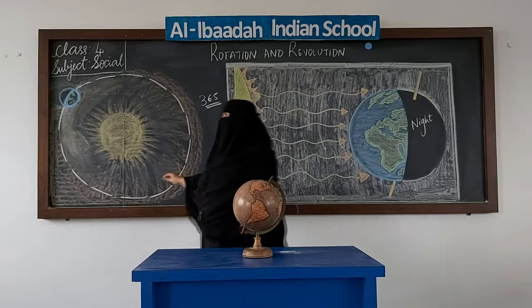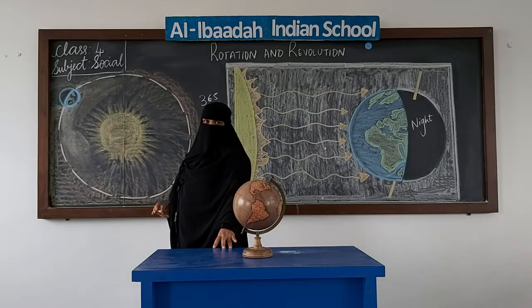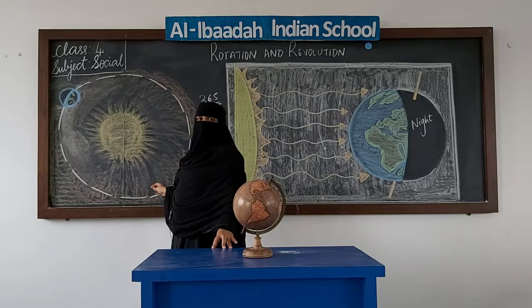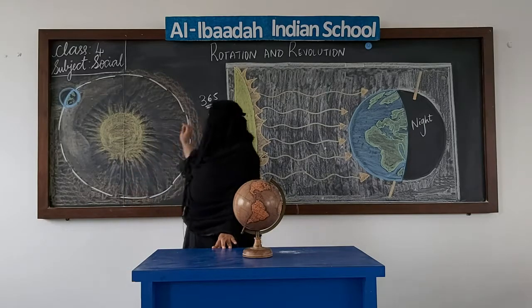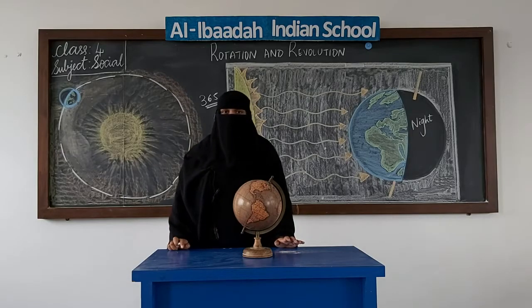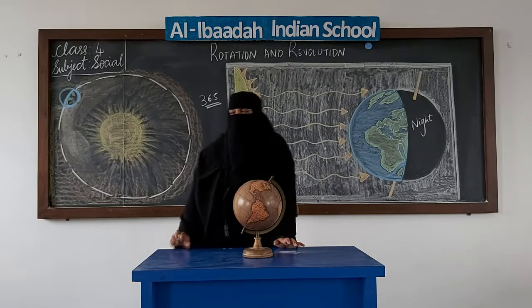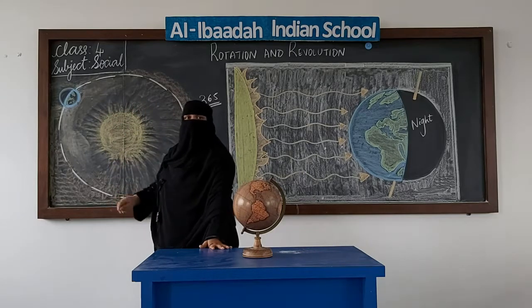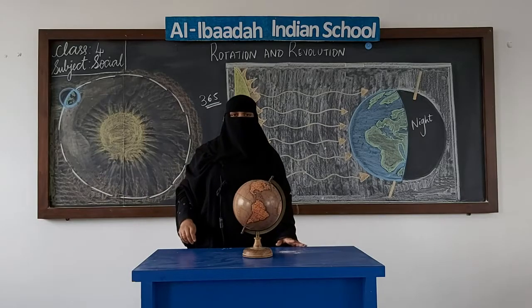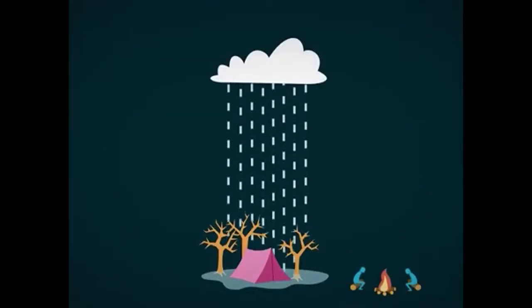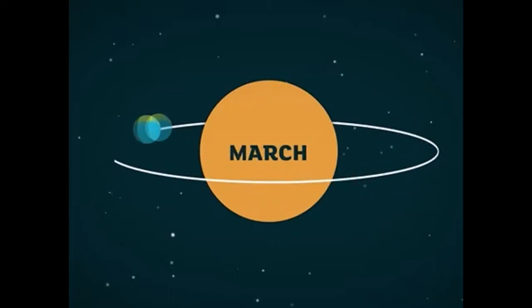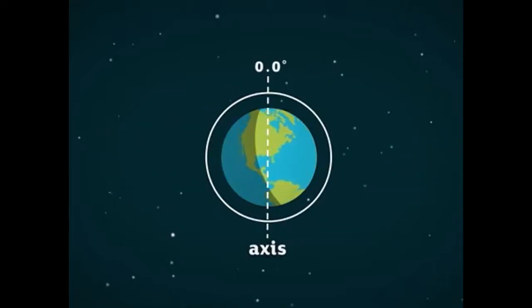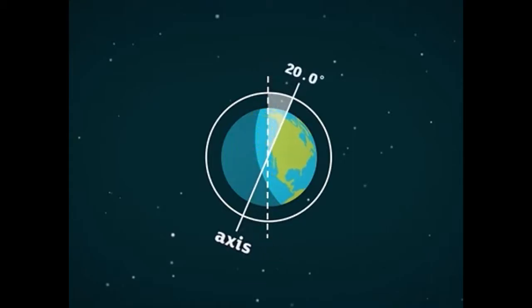Because of the revolution, we have different seasons. In 365 days we have different seasons. We have winter, summer, autumn, and monsoon seasons. We have all these seasons due to the tilt of the earth. Due to its tilt, we have a change in seasons.